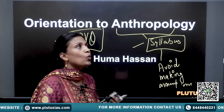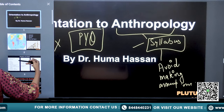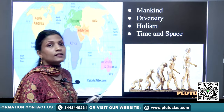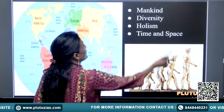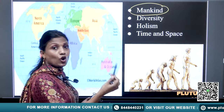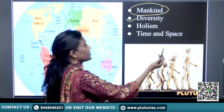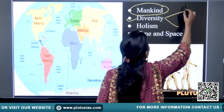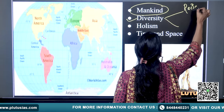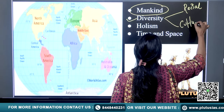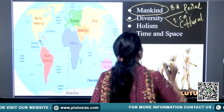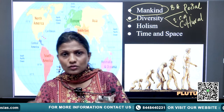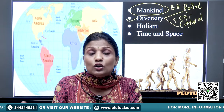You need to understand a few things about what anthropology basically is — very basic information. It is a study of men, a study of mankind. It talks about diversity in two forms: racial diversity and cultural diversity. So basically it is your biological anthropology and your social-cultural anthropology. In anthropology, the entire syllabus can be divided into biological anthropology and social anthropology as the two important parts.